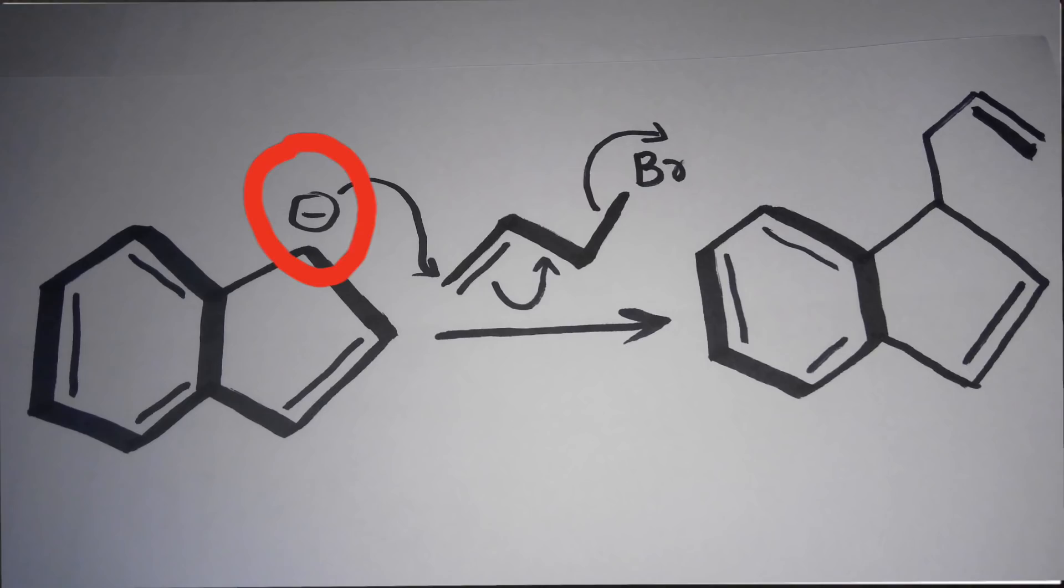This will displace the bromide from allyl bromide to give the final product. The pair of electrons moves here, the double bond shifts here, and the bromide gets displaced, and this product is formed.